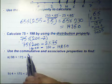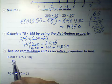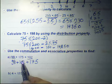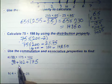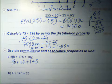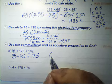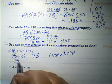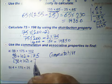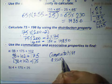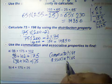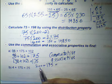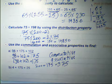Use the commutative and associative properties to find 98 plus 102 plus 175. Using the commutative property, 98 plus 102 equals 200. Then 200 plus 175 equals 375.